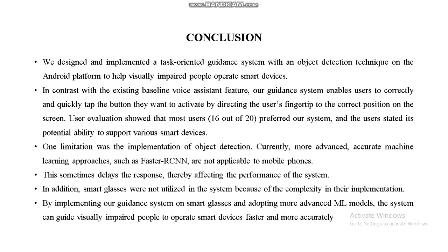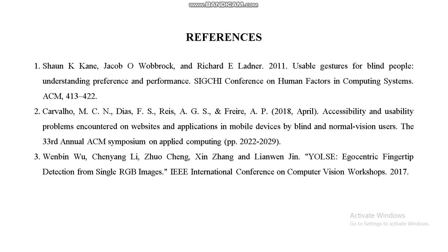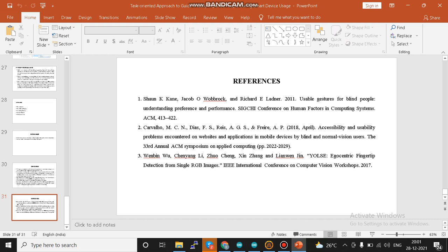By implementing our guidance system on smart glasses and adopting more advanced machine learning models, the system can guide visibly impaired people to operate smart devices faster and more accurately to activate or touch the correct buttons. That's all, thank you.